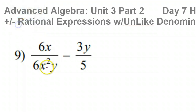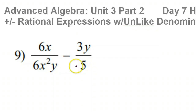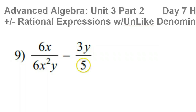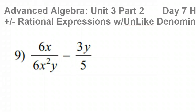We want like denominators. This side has a 6, this side has a 5. If we multiply by 6, then they'll both be 30.